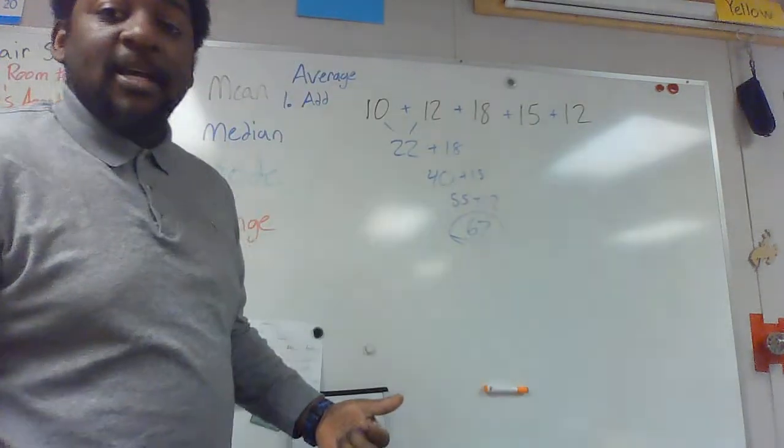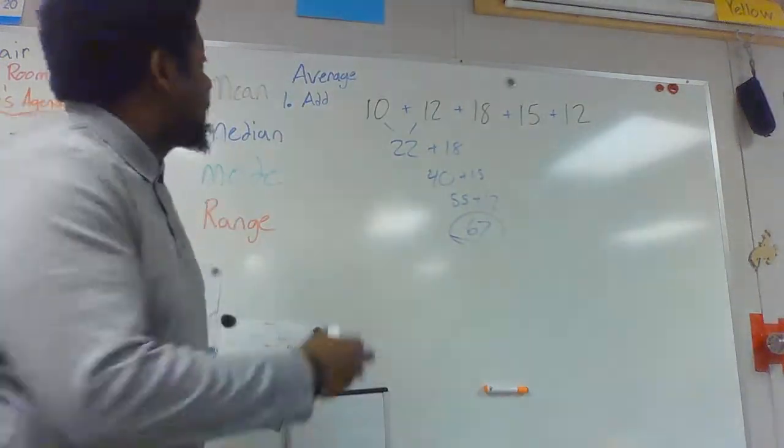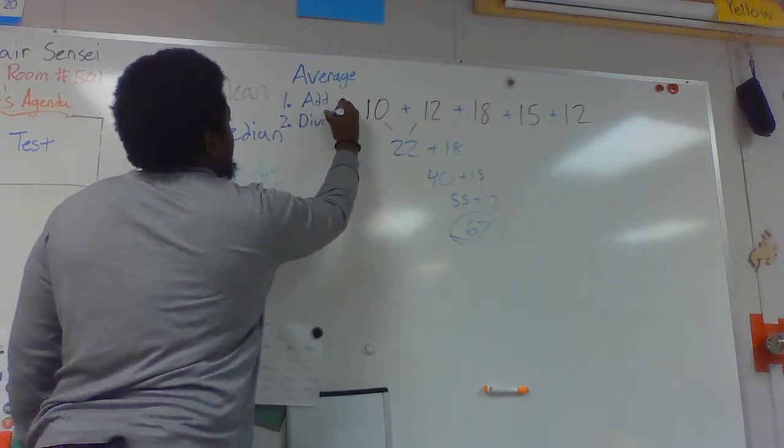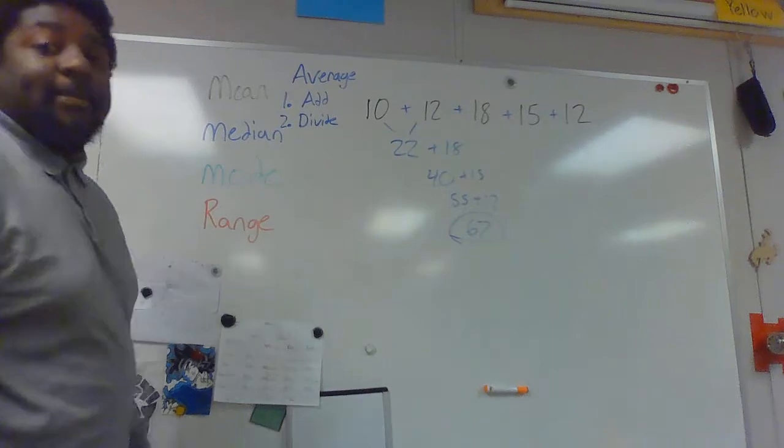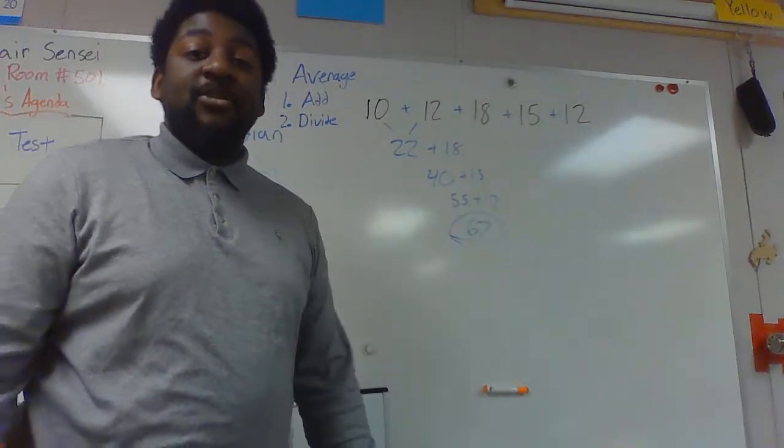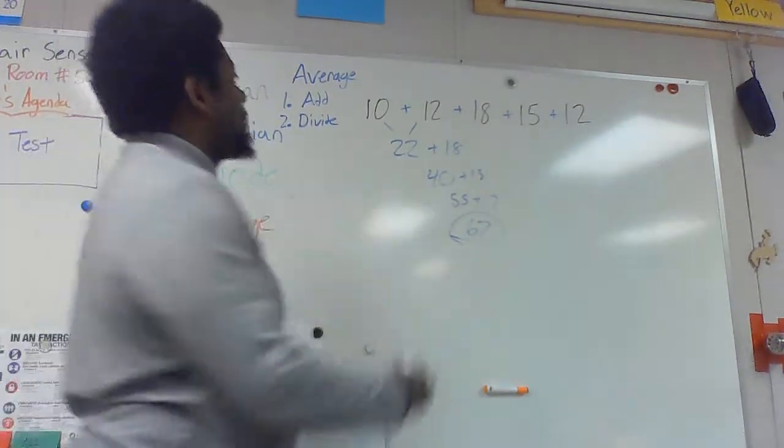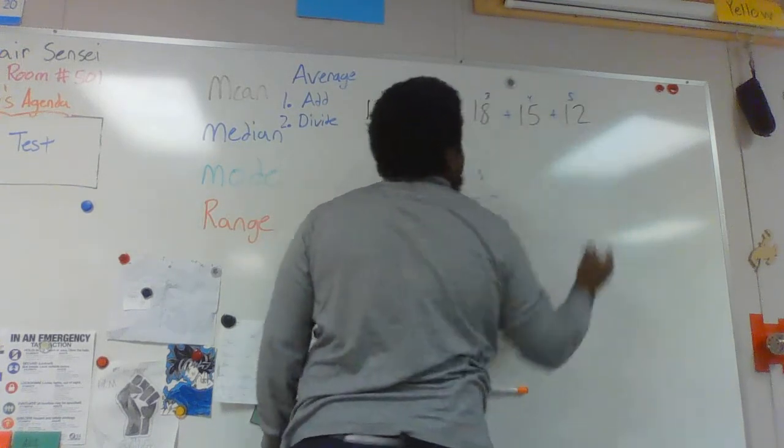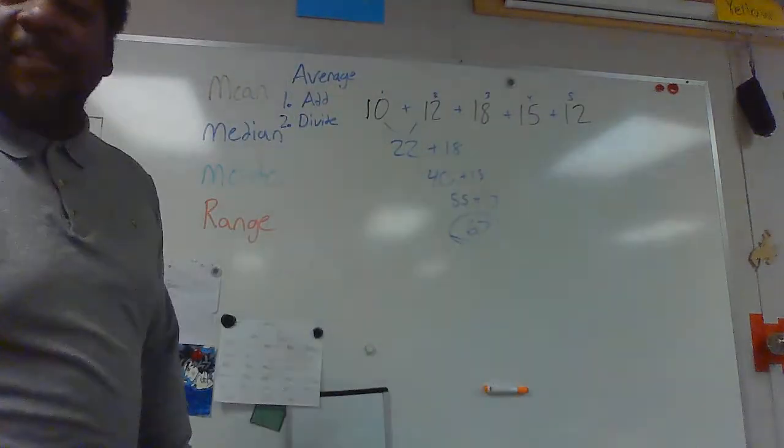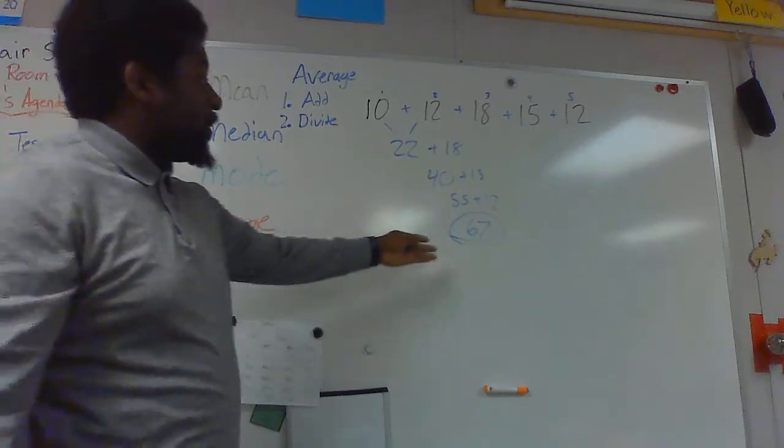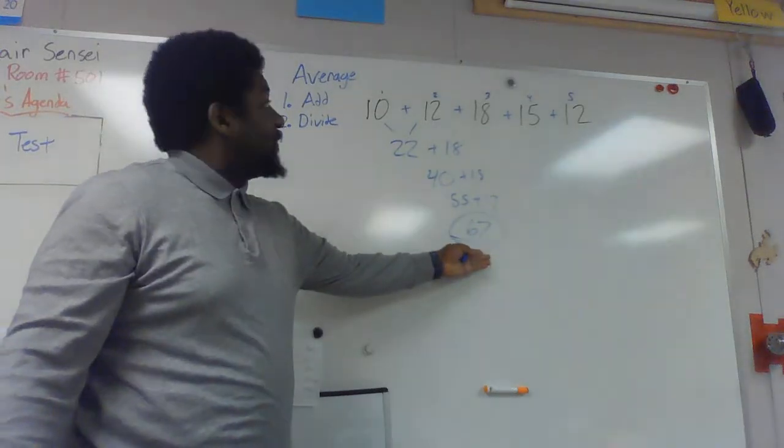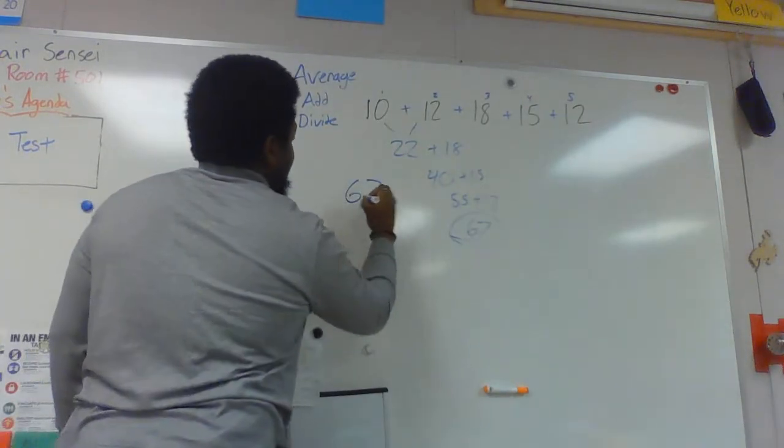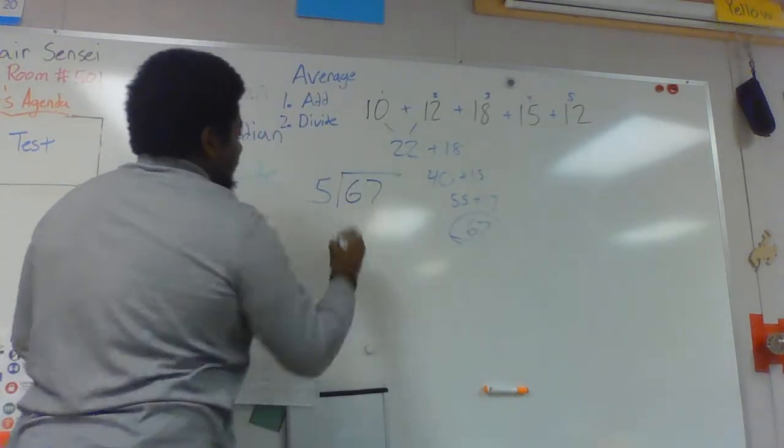So we add up our numbers, and then we divide. The number you divide by depends on how many numbers you have. In this problem, I have one, two, three, four, five numbers. So to find the average of these numbers, I take the number I get from adding, and I divide it by five. 67 divided by five.